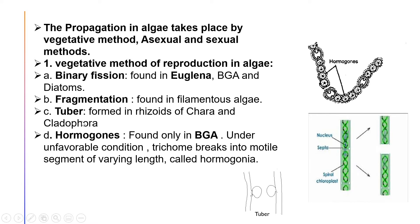The fourth type of vegetative method is hormogon formation. Hormogonia are found only in blue-green algae. Under unfavorable conditions, the trichome breaks into motile segments of varying length called hormogonia. At the heterocyst the filament breaks, and the cells divide into these short-length filaments known as hormogonia.